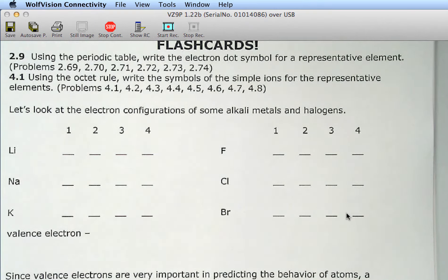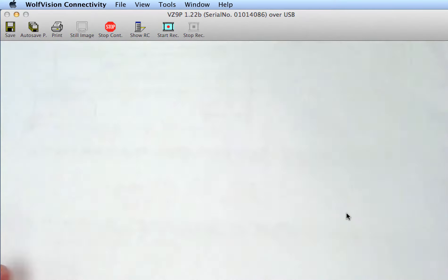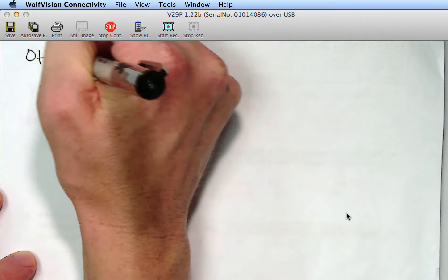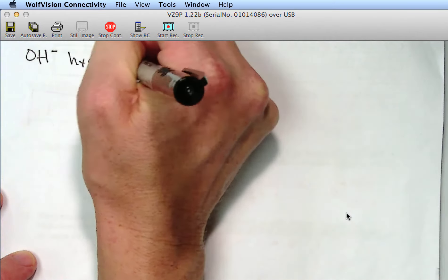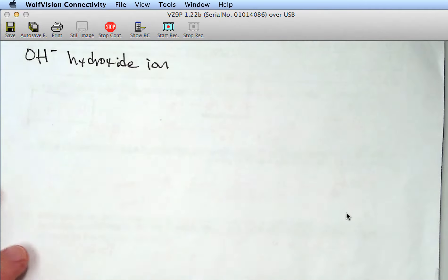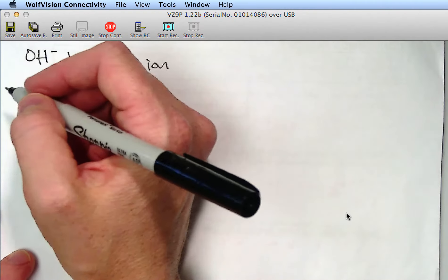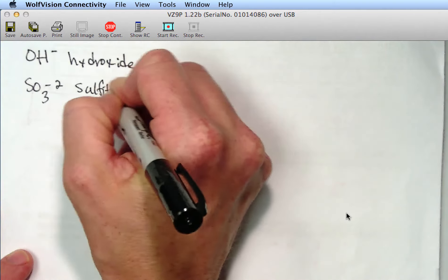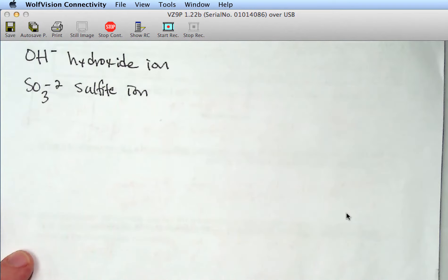So for those of you who started on your polyatomic ions, can you name some polyatomic ions? Hydroxide. So OH- hydroxide ion. Sulfite. Sulfite? SO3^2-. SO3^2- sulfite ion.